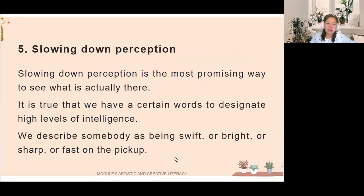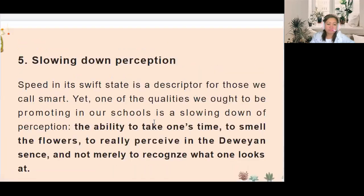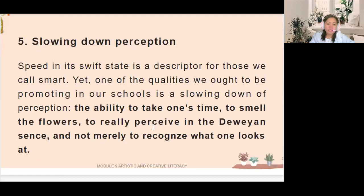Number five: slowing down perception is the most promising way to see what is actually there. We have certain words to designate high levels of intelligence — swift, bright, sharp, fast on the pickup. Speed is a descriptor for those we call smart. Yet one of the qualities we ought to be promoting in our schools is a slowing down of perception — the ability to take one's time, to smell the flowers, to really perceive in the Deweyan sense, and not merely to recognize what one looks at.